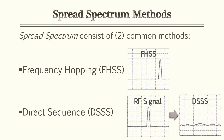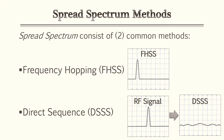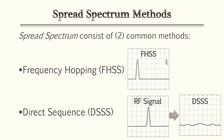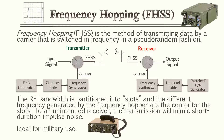Now that we have a rough idea what spread spectrum modulation is, we'll go a little deeper and identify the two common methods. The first method is frequency hopping, or FHSS, illustrated with a carrier wave hopping all over the bandwidth. The second is direct sequence, or DSSS, which shows a signal distributed over the whole bandwidth.